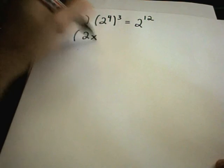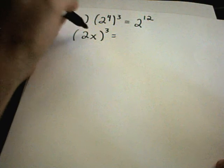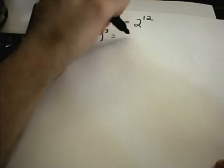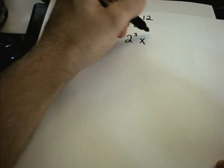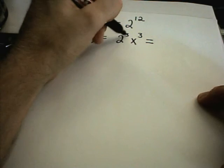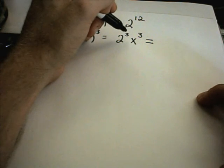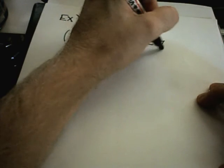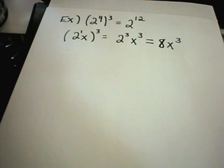Suppose I have 2x raised to the third power. Each factor gets the power, so that's 2 to the third times x to the third. 2 to the third is 2 times 2 times 2, which gives 8. The x to the third can't be simplified further, so the answer is 8x to the third.